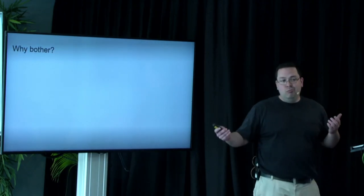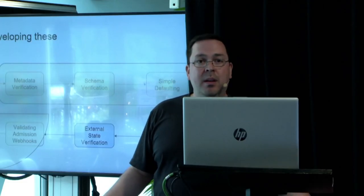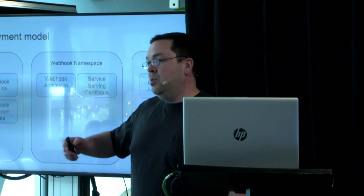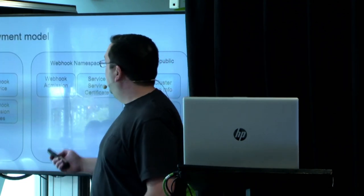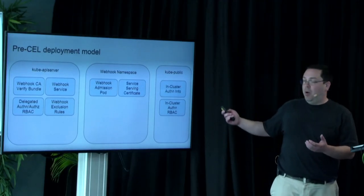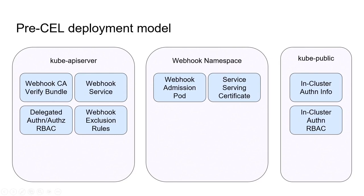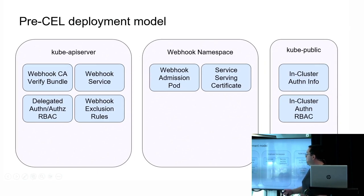So why bother to do it? We can already have mutating and validating admission webhooks. You technically have all the power that you need. The answer comes down to deployment model. When you look at a deployment model for admission webhooks, it has these basic parts. You have a kube-apiserver, some configuration with command line flags, configuration in the resource itself, and then trust built in both directions to the admission webhook pod itself, and then keeping it up to date.